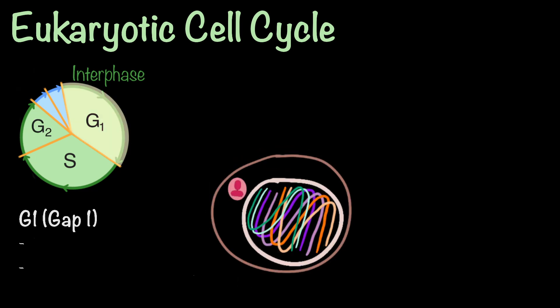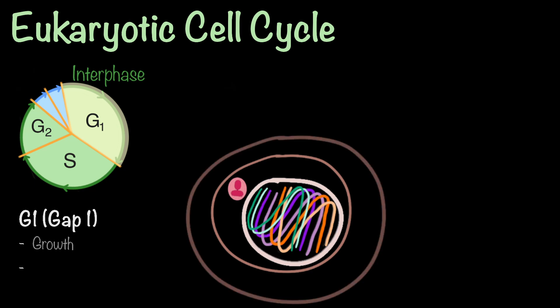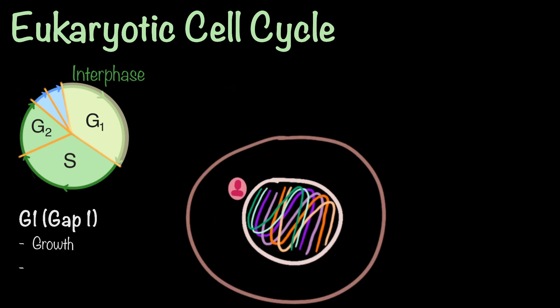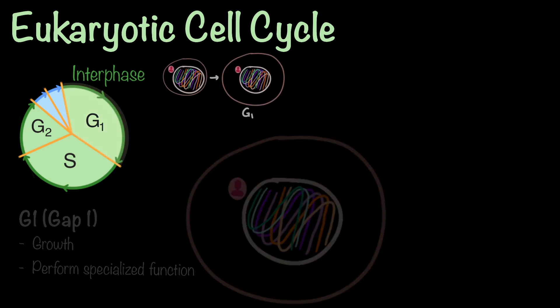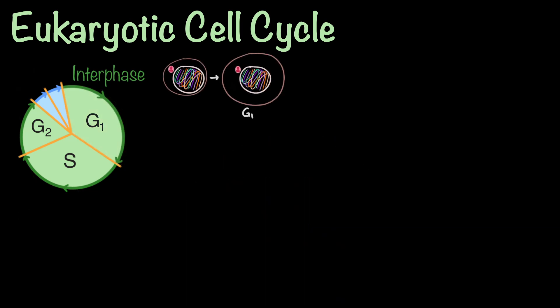During G1 phase, cells will grow in size, prepare for DNA replication, and perform their specialized functions. For example, a pancreatic cell will produce insulin. The G1 stage is crucial for assessing external signals and internal conditions to determine whether the cell should proceed with division.